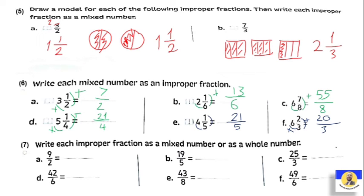Write each improper fraction as a mixed number or a whole number. To change an improper fraction to a mixed number, we do division. A mixed number has a whole number and a fraction. This fraction has two in the denominator. Nine divided by two: the nearest number we can use is eight. Eight divided by two equals four, and the remainder is one. So nine over two equals four and one over two.